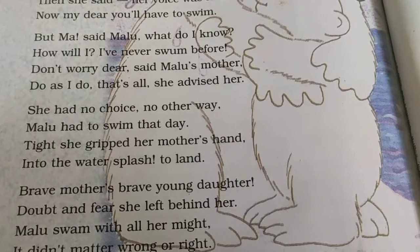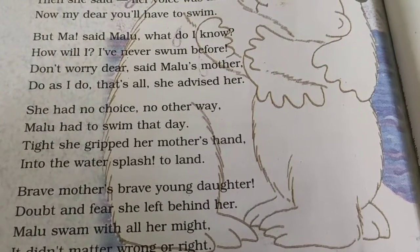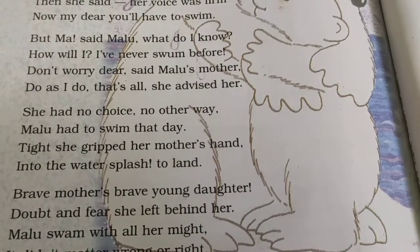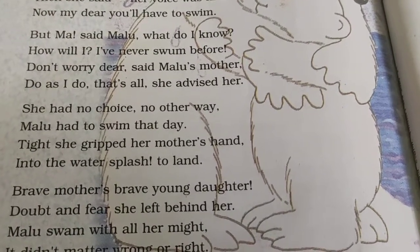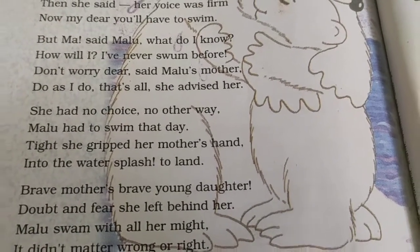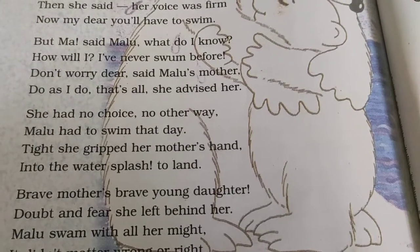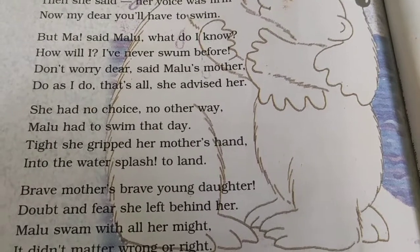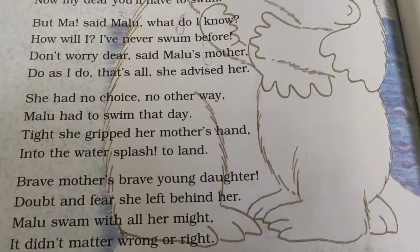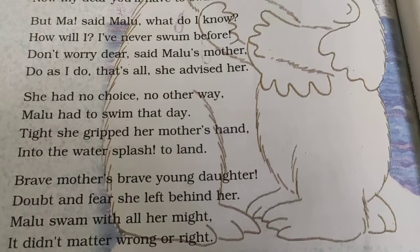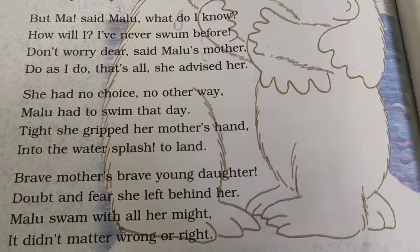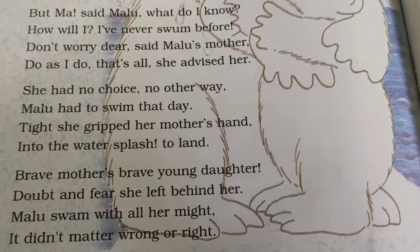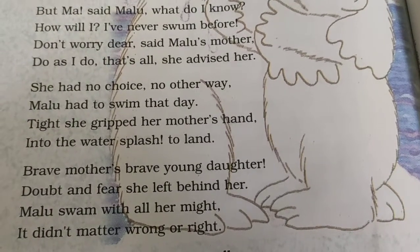She had no choice, no other way — Malu had to swim that day. Ab us din Malu ke paas koi doosra raasta nahi tha bachne ka, aur koi choice bhi nahi thi, toh Malu ko us din toh swimming karni hi thi. Tight she gripped her mother's hand — gripped ka matlab hota hai tight se pakadna — into the water splash to land. Aur uske baad Malu ne paani mein chalang laga di. Splash ka matlab hota hai chalang lagana.